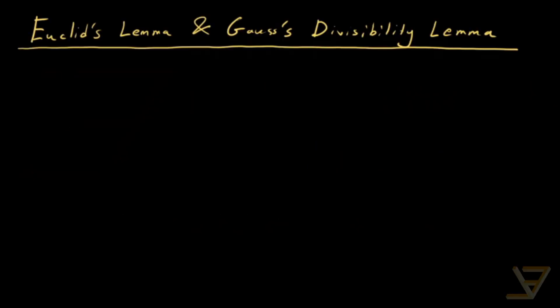Hi everyone. Let's talk about Euclid's lemma and Gauss's divisibility lemma from number theory. What we're going to do is first prove Gauss's divisibility lemma using Bézout's lemma, and then we're going to use Gauss's divisibility lemma to prove Euclid's lemma, which is an ancient lemma that Euclid had in his Elements.